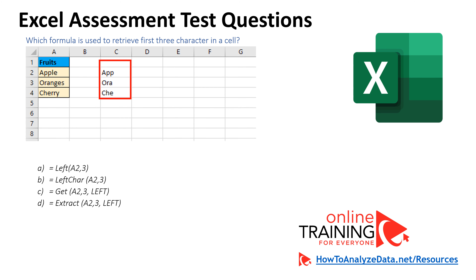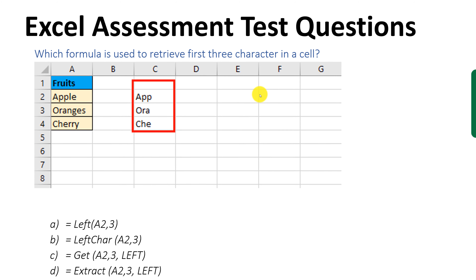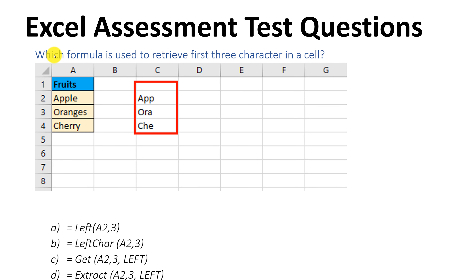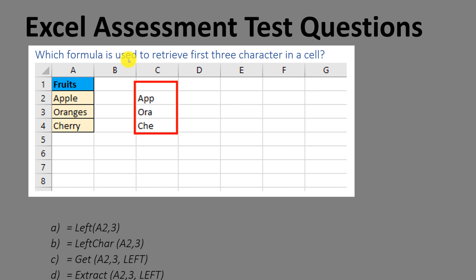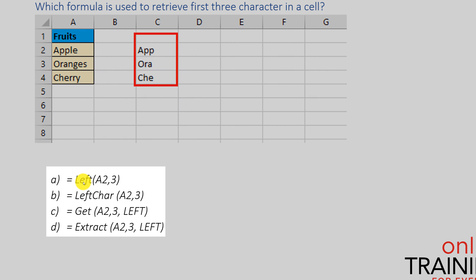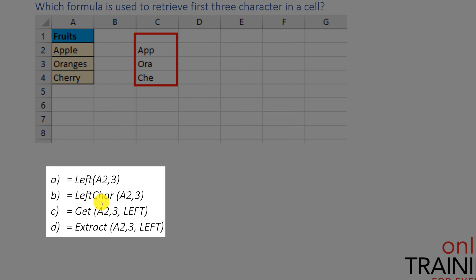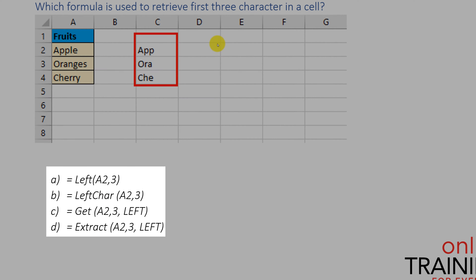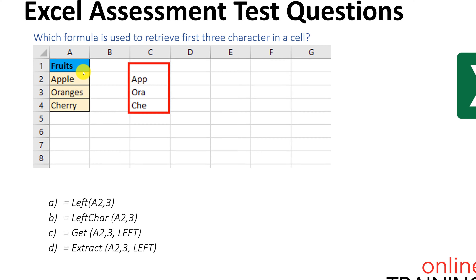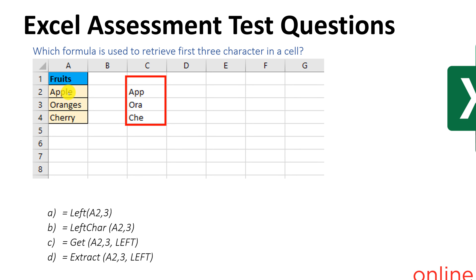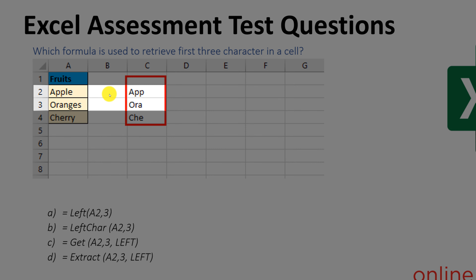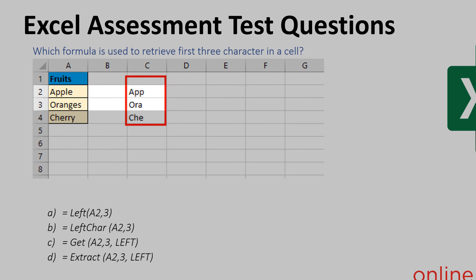Very frequently, you are tested on your knowledge of Excel formulas. In this question, you're asked which formula is used to retrieve the first three characters in a cell, and you are given four choices: left, left char, get, and extract. For a sample value of Apple, the first three characters would be A, P, P. For oranges, it would be O, R, A. So what do you think is the right choice?